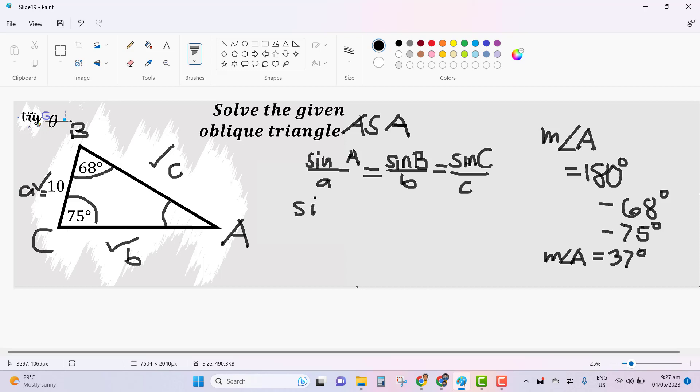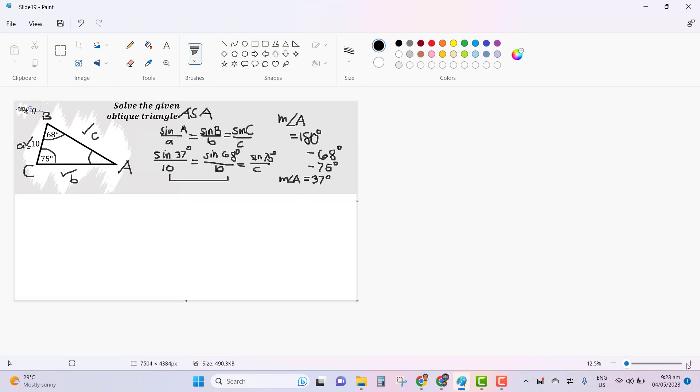We can substitute all given and solved measurements. We have sine 37 degrees over 10, that's your side A. Take note, we have already a pair of given measurements. So sine B, based on the notations we had earlier, that's 68 degrees over B. We have equal to sine C, which is 75 degrees over C. That's why we solved angle A earlier. We can pair it to this and to the last one in solving for the remaining unknown measurements.